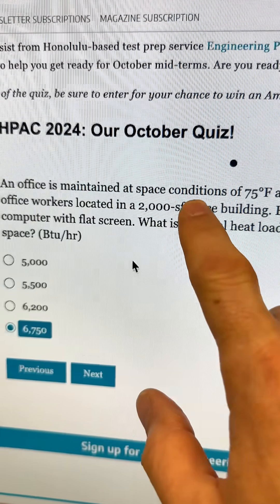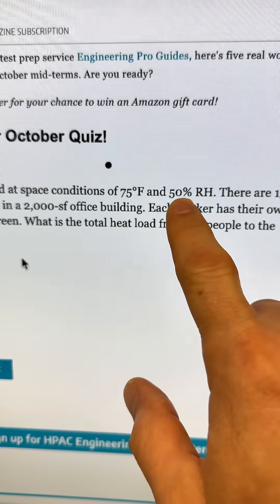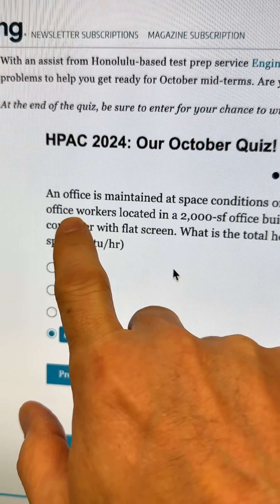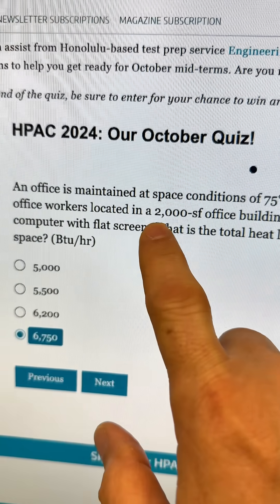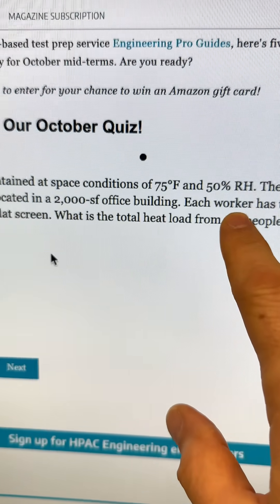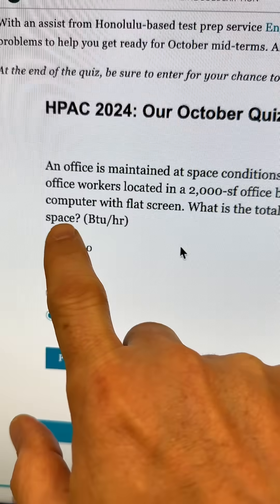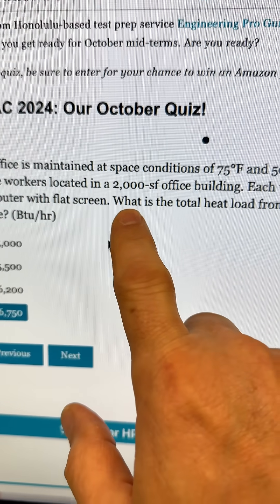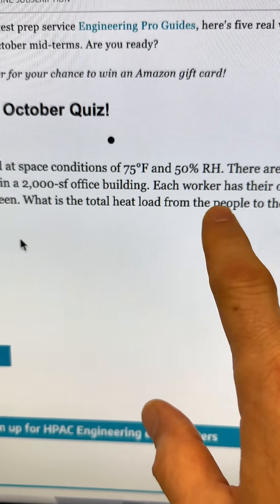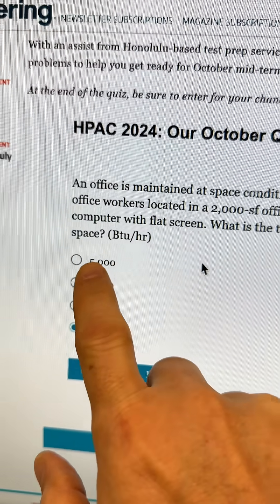Office is maintained at a space condition of 75 degrees, 50% relative humidity. There are 15 office workers located in a 2,000 square foot office building. Each worker has their own computer with flat screen. What is the total heat load from the people to the space in BTUs per hour?